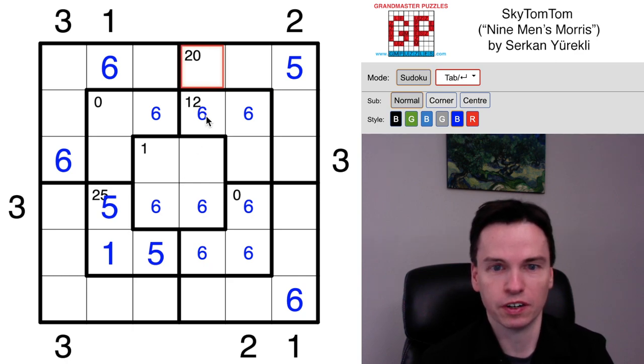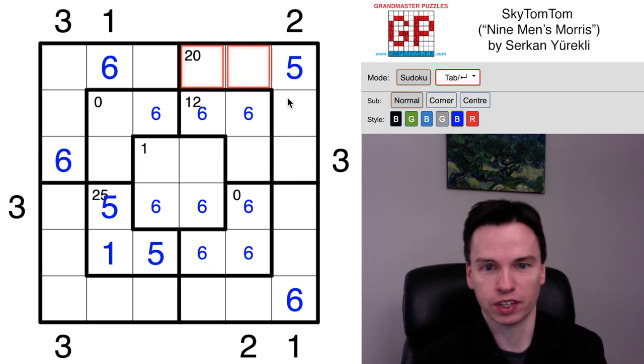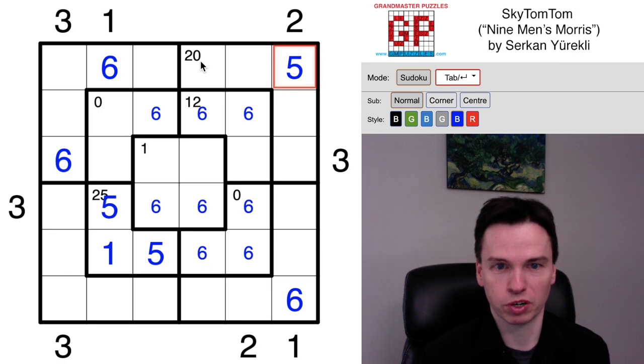20 up here could be a sum or a product, but let's look at the largest sum it can be right now. We'd have three-four in these cells, three-four in those cells, those add up to 14 with five as 19, so that doesn't work. So this is a product.